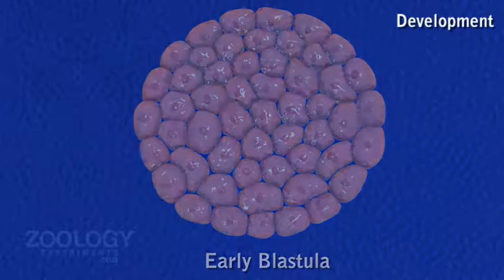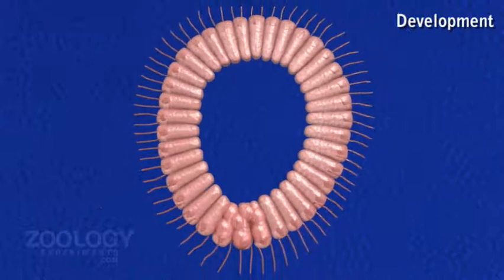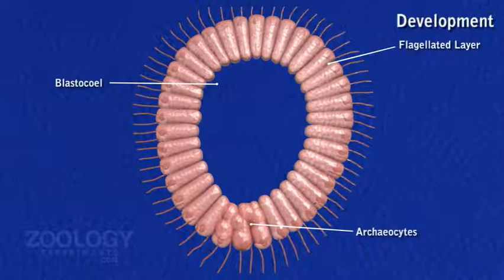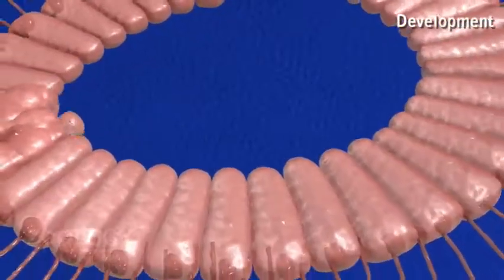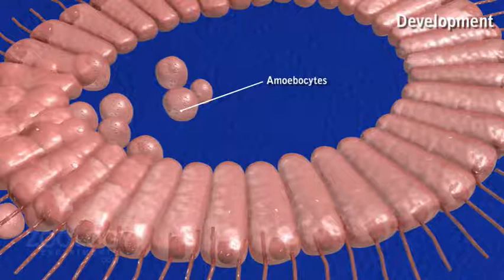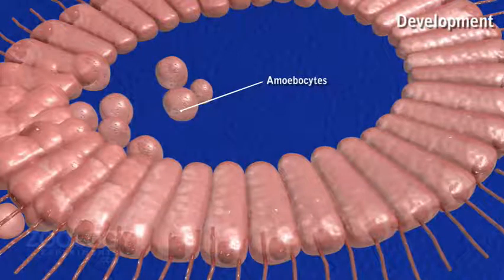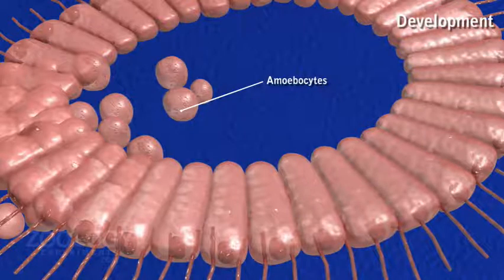At the posterior pole of the larva occurs a group of large, rounded, granular, non-flagellated cells. These are believed to be archaeocytes which form all future archaeocytes and reproductive cells of Leucosolenia. These granular cells later wander into the cavity of the embryo; some adjacent flagellated cells also lose their flagella, become amoeboid, and pass into the internal cavity.